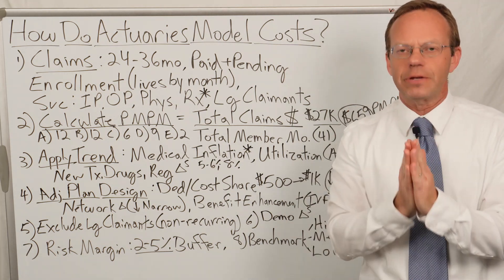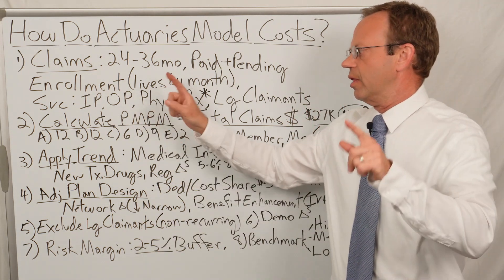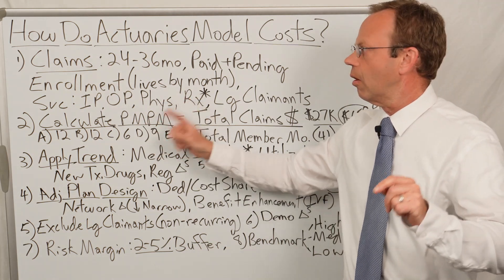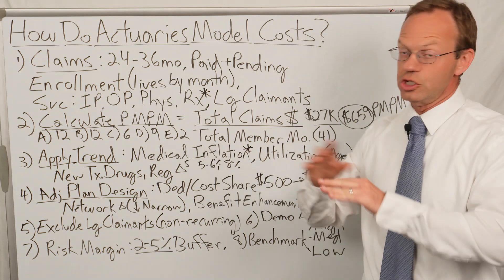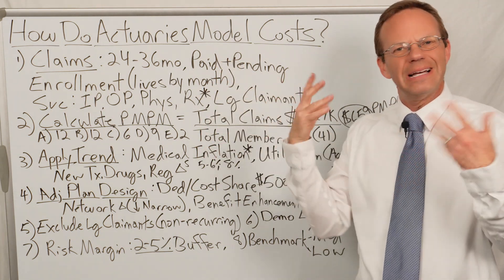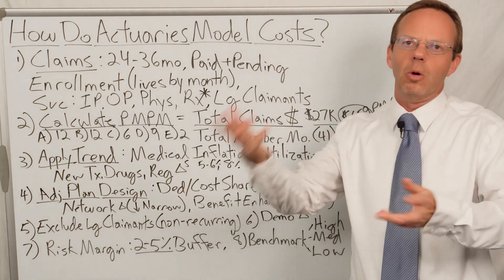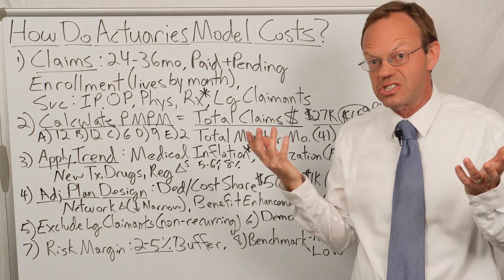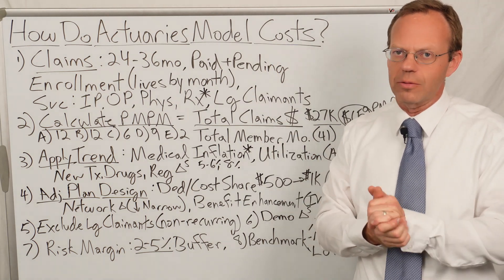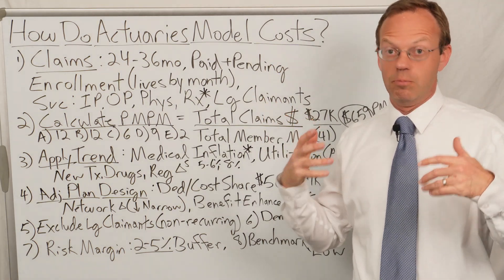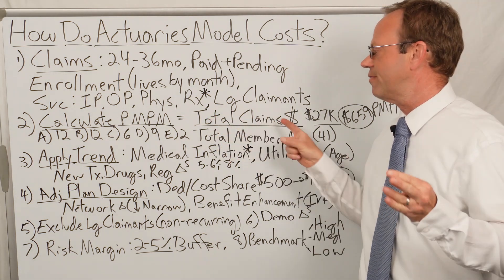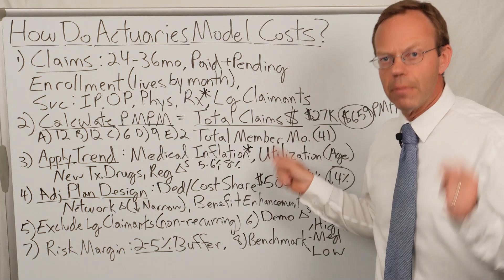Then they calculate — and this is really important — the per member per month amount on those historic claims. To do that, you take the total claims amount, both paid and pending. Pending claims matter because it takes 60 to 90 days to actually pay a claim, and those pending claims will probably ultimately be paid. So you take the total claims expense and divide it by the total member months.